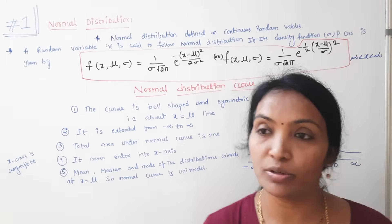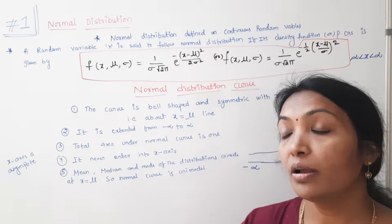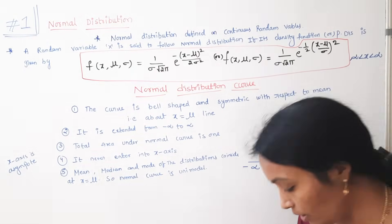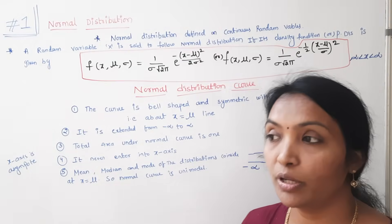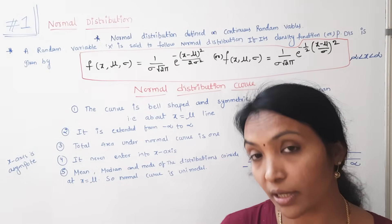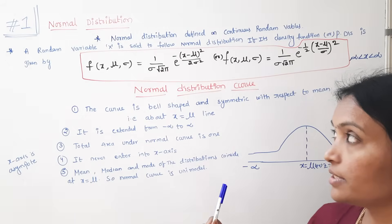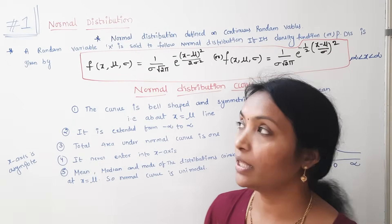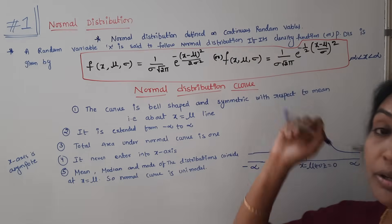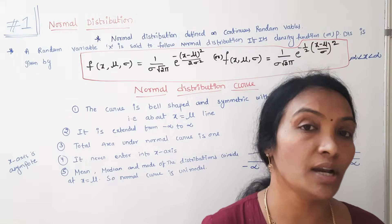In probability distributions, there is a difference between discrete and continuous probability distributions. Distributions like binomial and Poisson have a discrete random variable. Normal distribution, on the other hand, is defined on a continuous random variable.